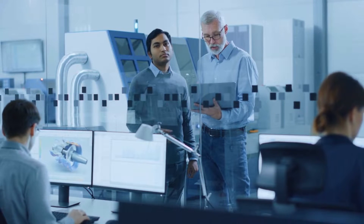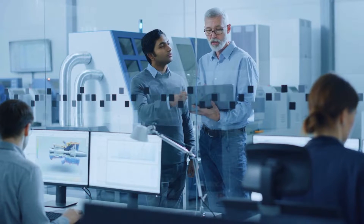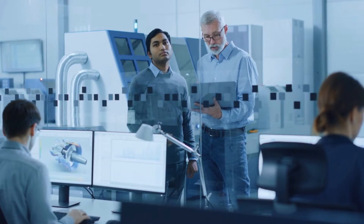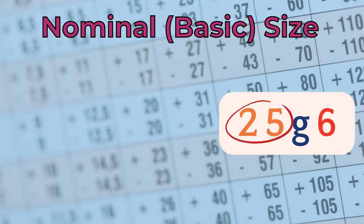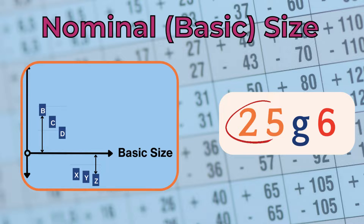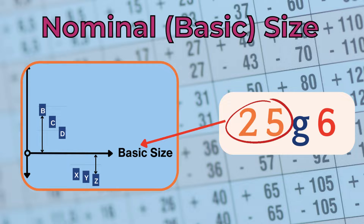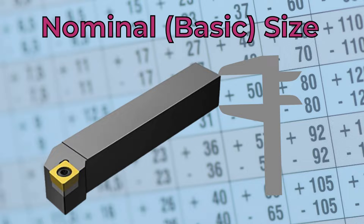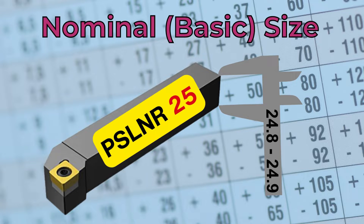Understanding the fundamental terms is the foundation for correctly interpreting fits and tolerance charts. The nominal size, also called basic dimension, is the dimension by which a feature is identified for convenience. It's also the starting point from which the limits are derived by applying data obtained from the charts. For example, a square shank of a cutting tool whose actual height is between 24.8 and 24.9 mm would be known as a 25 mm shank, since its basic size is 25 mm.